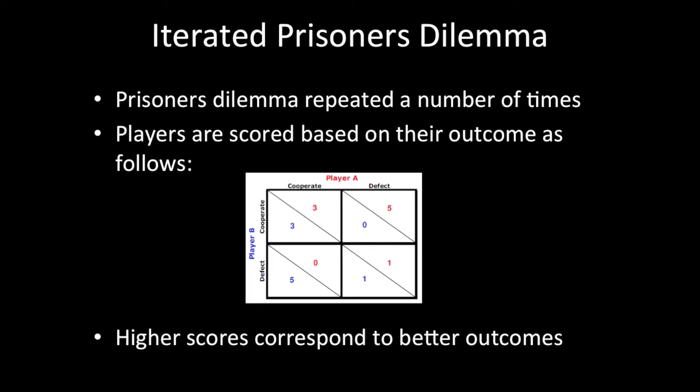The players receive a numerical score based on the outcome of each turn, and those are added up at the end. If player A cooperates with player B, both of them get 3 points. If player B cooperates and player A defects, player A gets 5 and player B gets 0, and vice versa. If they both defect, they each get 1 point. Higher scores correspond to better outcomes.